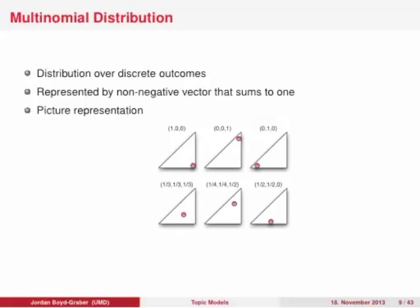Before we get to the statistical modeling details, let's briefly review some of the distributions we'll be dealing with. A multinomial distribution is a distribution over discrete outcomes represented by a non-negative vector that sums to 1. We can represent these multinomial distributions as a point in a triangle, called a simplex. Each simplex represents all possible distributions over three outcomes, and this corresponds to the triangle picture showing the allocation of documents to topics.